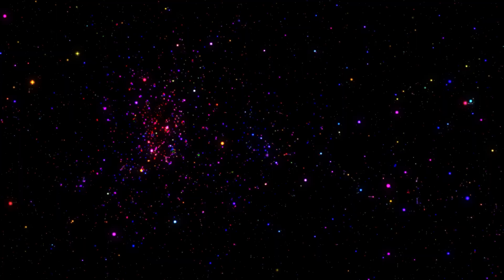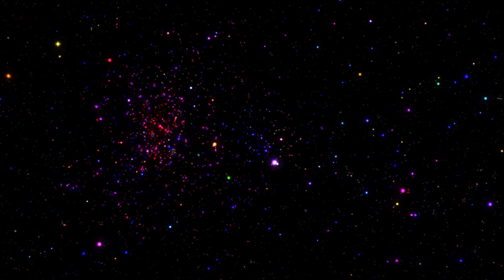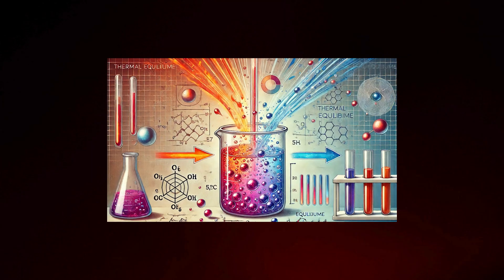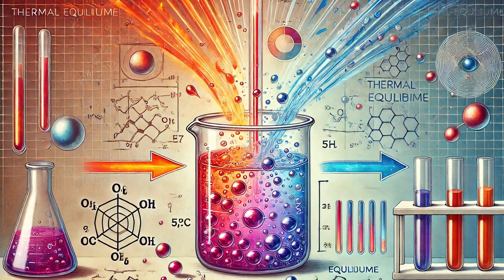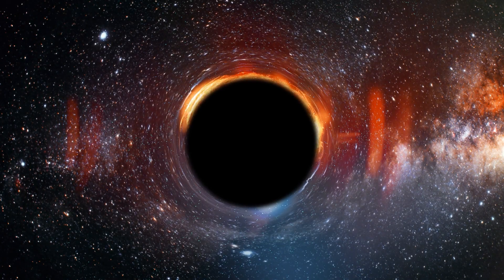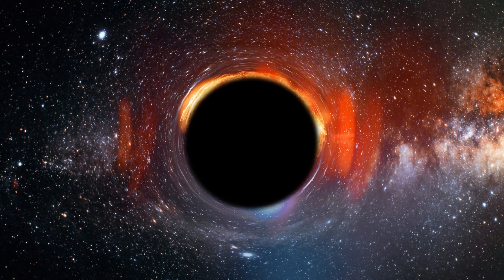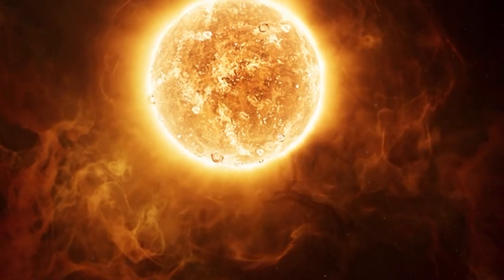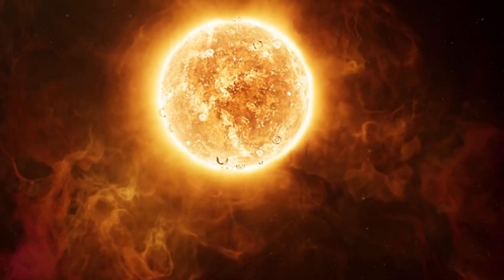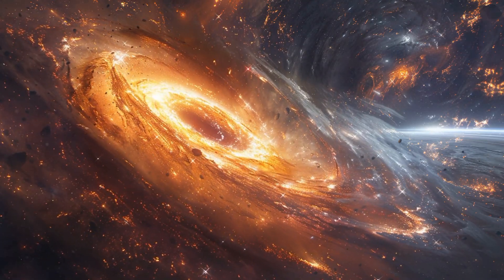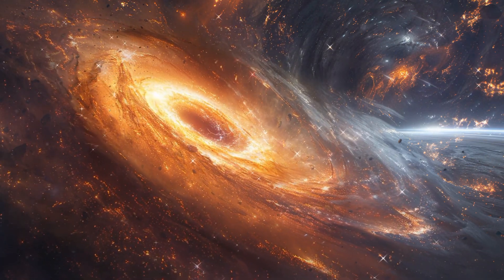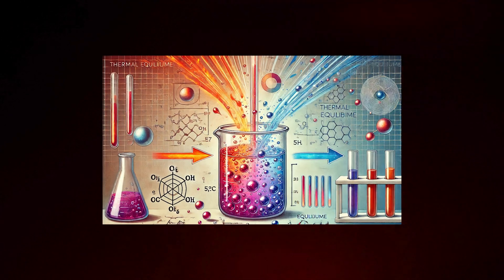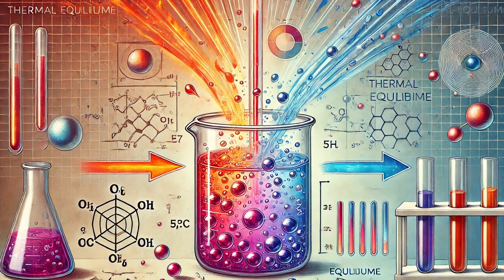According to inflationary cosmology, energy was uniformly distributed in the early universe prior to cosmic expansion, which means the universe was essentially in a situation akin to thermal equilibrium. In actuality, the two occurrences are incredibly different. While in a state where most matter has collapsed into black holes, entropy in a gravitational attraction is very low if energy is equally diffused. In addition, gravity was a significant force in the early cosmos. Because the system is thermodynamically unstable, such a state is not in thermal equilibrium and, in reality, does not exist.